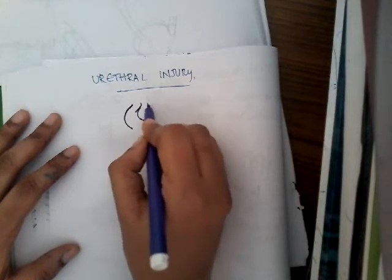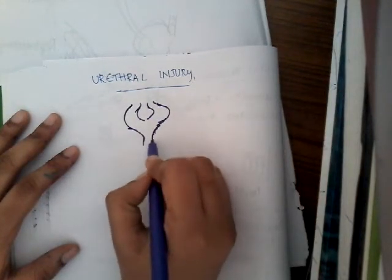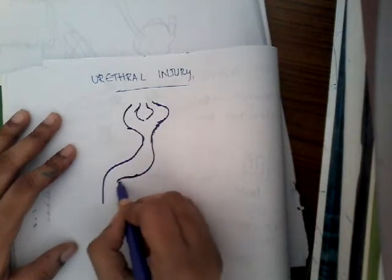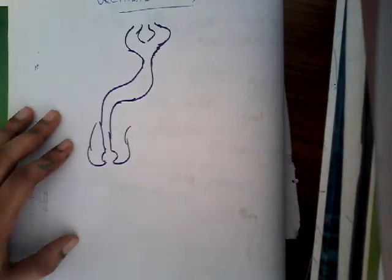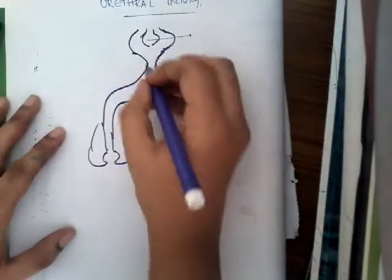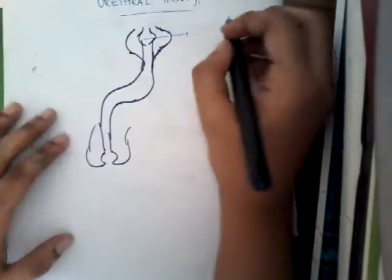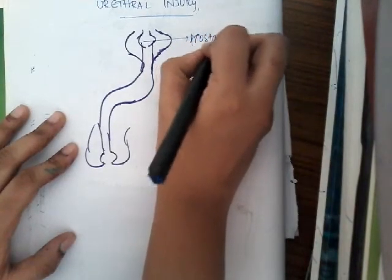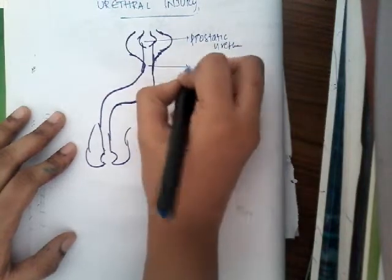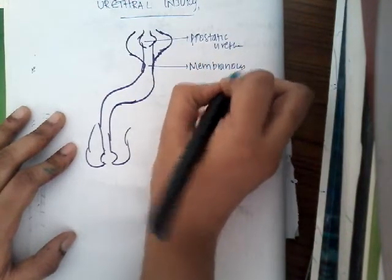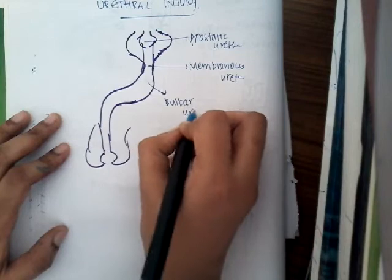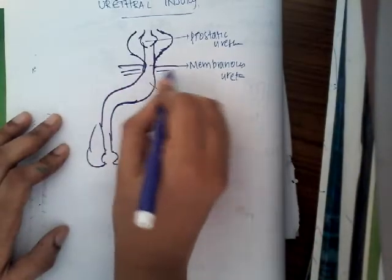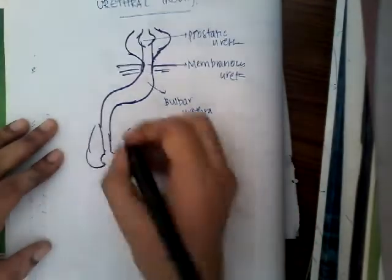The urethral injury can be divided into two types based on the site of injury. The parts of the urethra are: prostatic urethra, membranous urethra, bulbar urethra, penile urethra, and fossa navicularis.